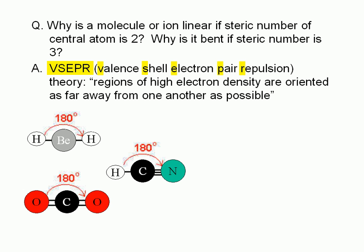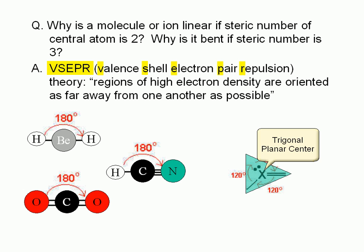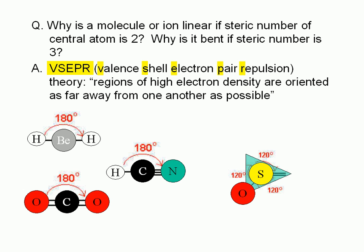Let's examine what happens if the steric number is 3. There will be three groups of electrons sticking out of the central atom. In order to be as far away from each other as possible, the groups must be oriented 120 degrees apart if the three groups are identical; if they are not, the angles would still be very close to 120 degrees. We say that the central atom in this case has a trigonal planar geometry. Since a triatomic molecule has only three atoms, only two of the three groups can have an atom on the other side, and one of the groups must then be a lone pair. For example, in sulfur dioxide, the two oxygen atoms are located at two of the positions, and tracing a path from one oxygen through sulfur to the other oxygen shows the atoms are not all in one line — this molecule is bent.